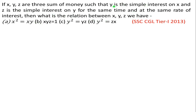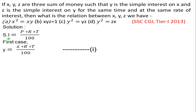आईए हम equation बनाके solve करते हैं। हमें पता है कि formula SI = PRT/100 होता है। तो पहले case में y is the simple interest on x — यानी y = x·R·T / 100। यहाँ principal amount x है, rate R है, time T है। यह हमारा equation 1 बन गया।